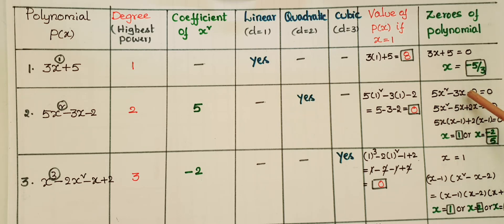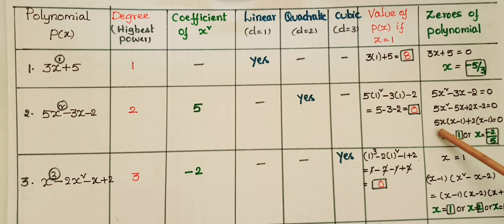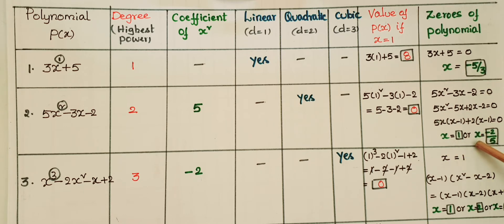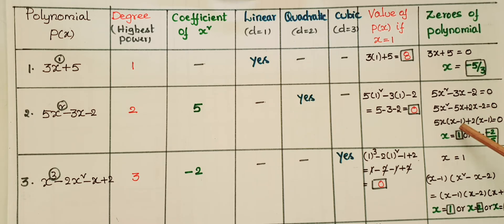The zeros of this polynomial can be calculated using the factorization method. By splitting the middle term: 5x square minus 3x can be written as minus 5x plus 2x minus 2 equals 0, then 5x(x minus 1) plus 2(x minus 1) equals 0, so (x minus 1)(5x plus 2) equals 0. Therefore x is equal to 1 or x is equal to minus 2 by 5. These are the zeros of this polynomial.